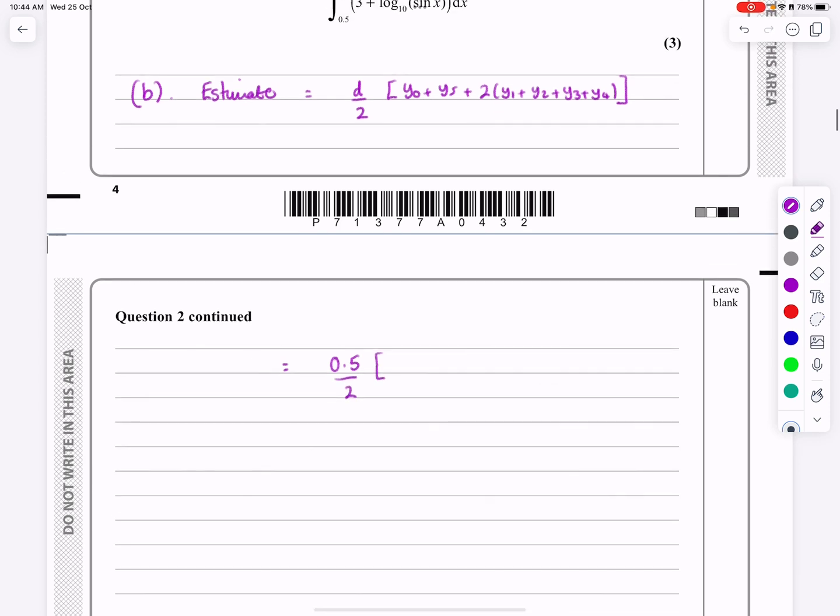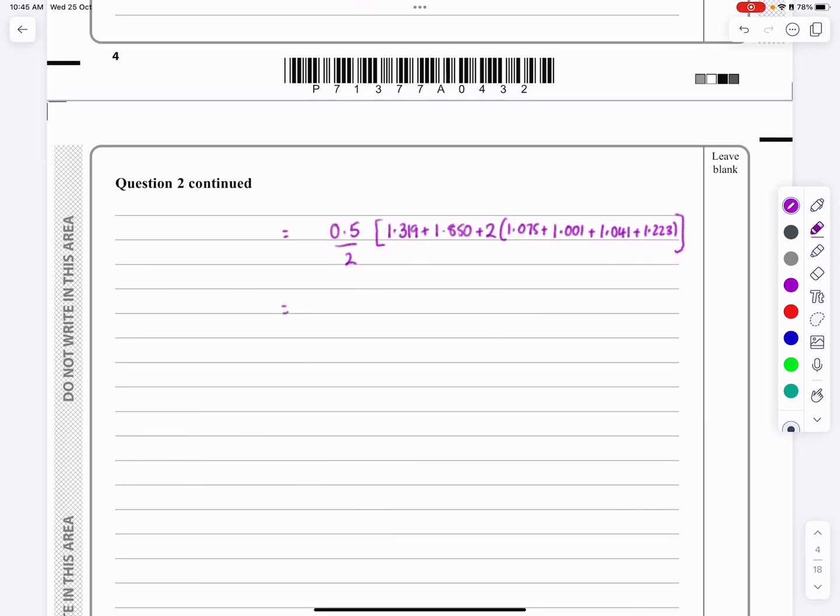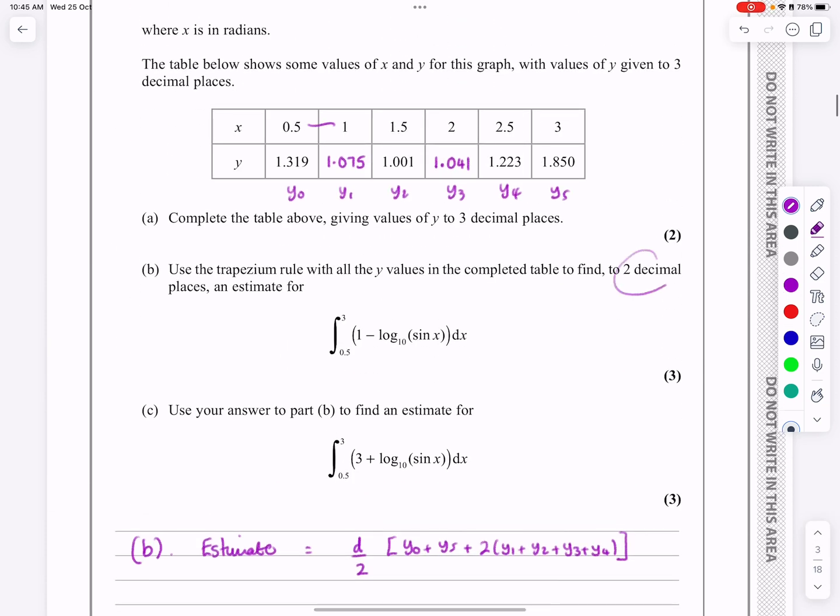And then we're simply subbing everything in. So we had 1.319 plus 1.850, and then two lots of 1.075, 1.001, and just take your time with this while you're doing it. Plenty of marks available for this, so just make sure we're not losing anything through any silly errors here. Quick check that those values have been copied down properly from the table before you actually go ahead and do it. But assuming you've got all that absolutely sorted out, this comes to 2.96. And again, just quickly go back. It does say to two decimal places there. So make sure you've done that.